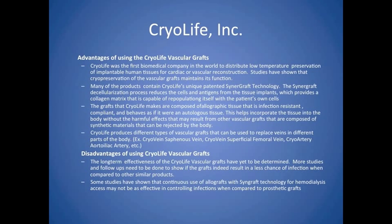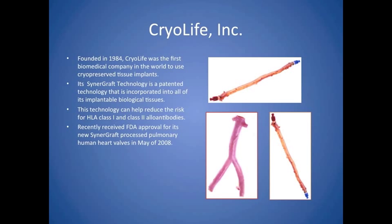Cryolife produces many different types of vascular grafts that can be used to replace veins in different parts of the body. This technology can help reduce the risk for HLA class 1 and class 2 allo-antibodies, and we've recently received FDA approval for our new CineGraft process pulmonary human heart valves as of May 2008.